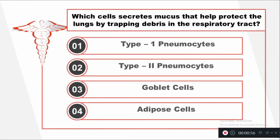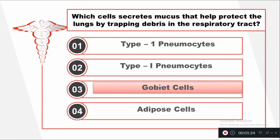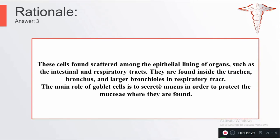Question number one: Which cell secretes mucus that helps protect the lungs by trapping debris in the respiratory tract? Option one: Type 1 pneumocyte. Option two: Type 2 pneumocytes. Option three: Goblet cells. Option four: Adipose tissue. The right answer is goblet cells.